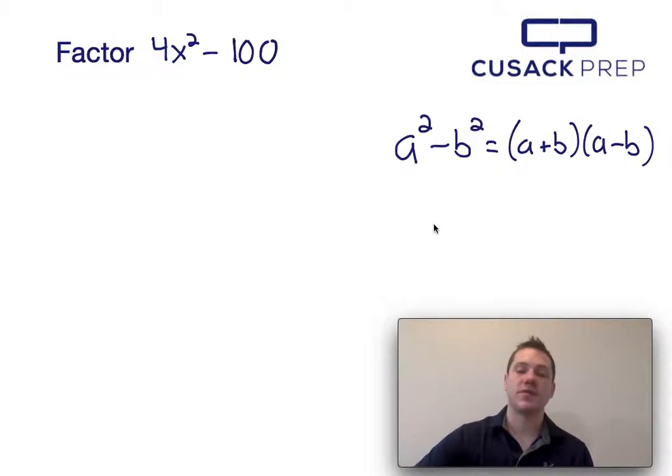Now the first thing I notice is both 4x² and 100 are perfect squares. Since they're separated by subtraction, I can factor this using the difference of squares equation, which I have presented over here on the right side.